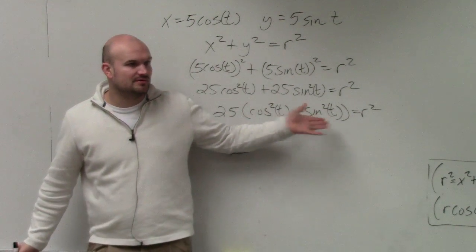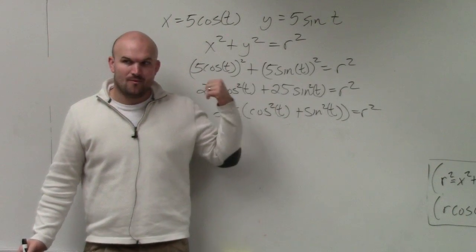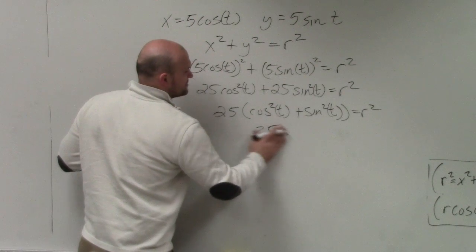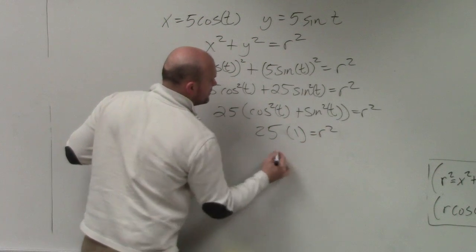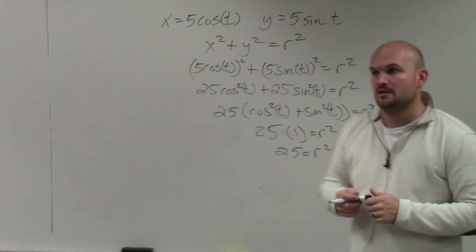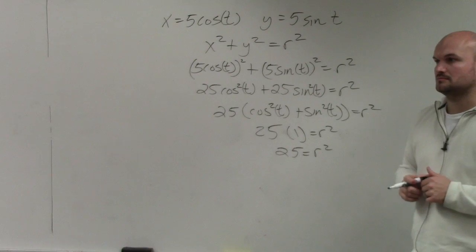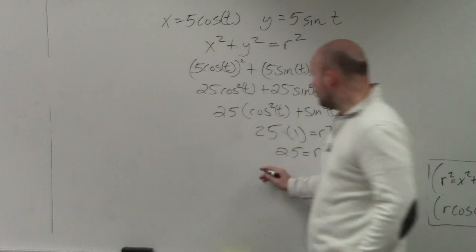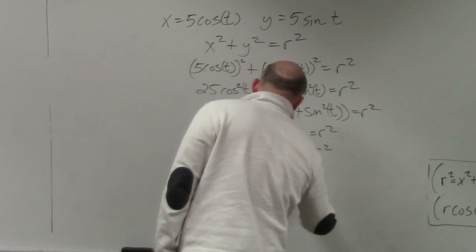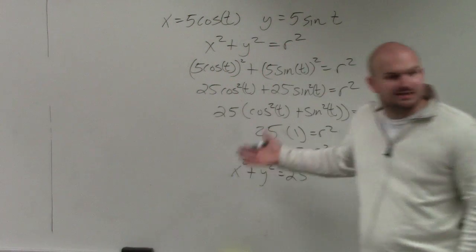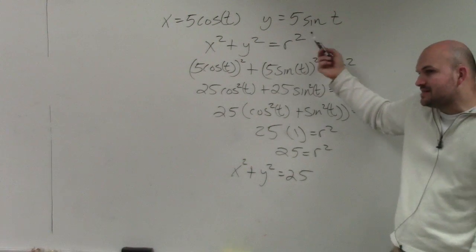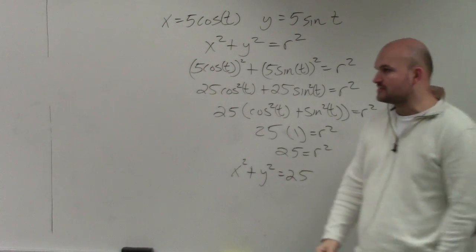Now, what's cosine squared plus sine squared of t? It equals 1. So we have 25 times 1 equals r squared, which means 25 equals r squared. So you could say r equals 5, or write the equation as x squared plus y squared equals 25, because we're trying to write it in terms of x and y, not t.